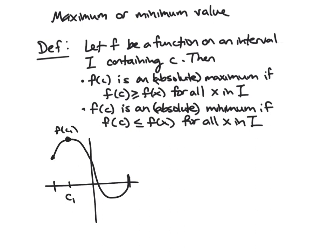And then likewise, if we look at c2 here and then f of c2, we notice that f of c2 is less than or equal to all values in our interval. And so that would be an absolute minimum. So this is our min and this is our max.